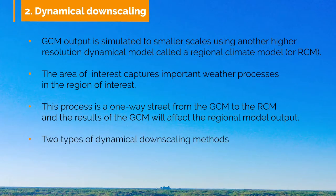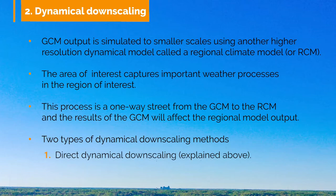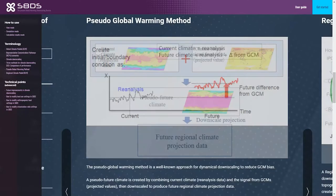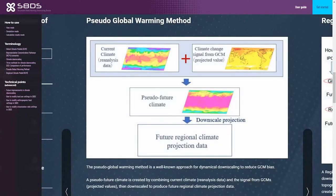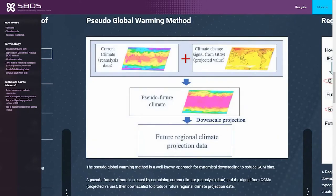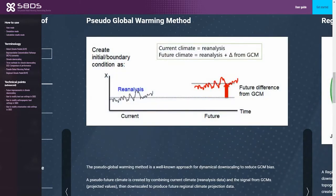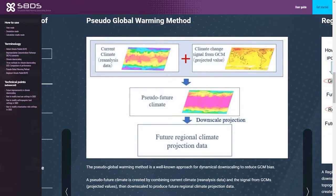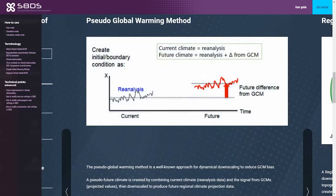There are different approaches to dynamical downscaling. Direct dynamical downscaling is explained above, while the pseudo-global warming approach, or PGW, uses current climate reanalysis, or global climate data observation, and climate change signals — monthly average differences between current and future climate projections produced by GCMs — to produce a pseudo-future climate projection with a much higher resolution. The S8 downscaling tool uses this PGW approach.